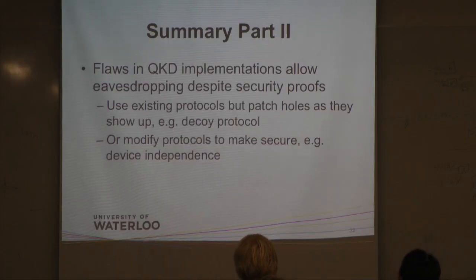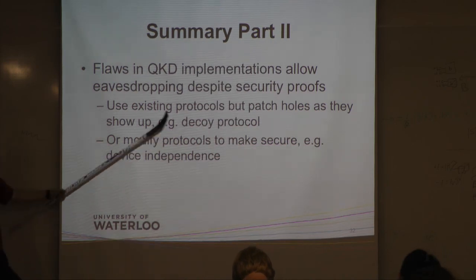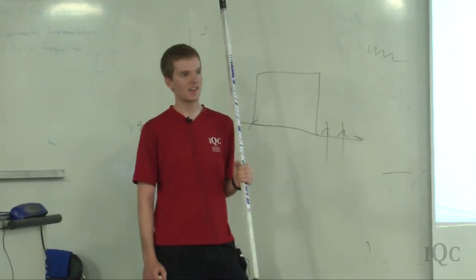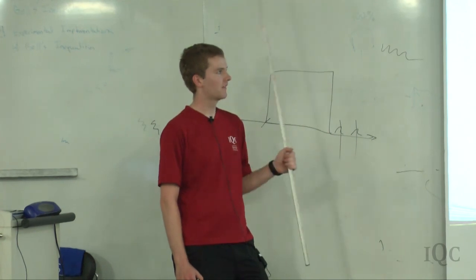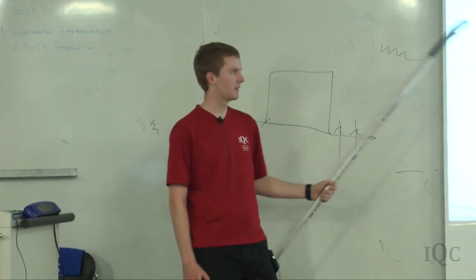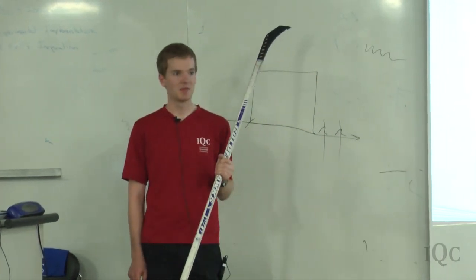So just to finish off this part, there's flaws in QKD implementations that allow eavesdropping. Even though the security proof is good, there's some experimental implementation flaws, and Eve can get in there. So we can either patch holes as they appear. QKD is really going through a lot of hacking and patching right now. Or we can modify the protocols, invent new ones. For example, that device-independent entanglement baseline.